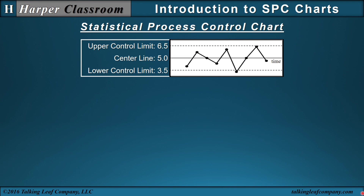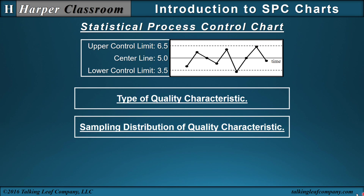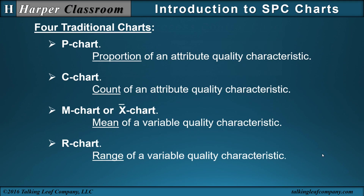This has been a simple process control chart to illustrate the steps in the approach. In industry, there are many process control charts, which will be based on the type of quality characteristic you measure and its sampling distribution. Four traditional charts are the P and C charts — for the proportion and count of an attribute characteristic — and the X-bar and R charts — for the mean and range of a variable characteristic. These will be the subject of other videos in the Harper Classroom series, each based on this introductory video.